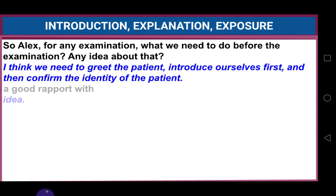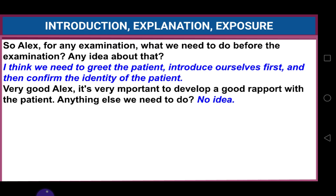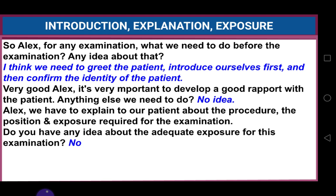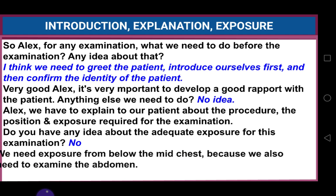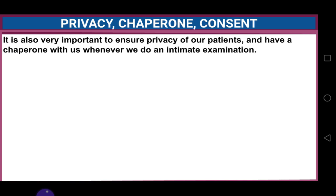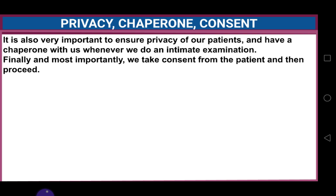Ask the student what we need to do before the examination. They might say: greet the patient, introduce ourselves, and confirm the patient's identity — praise them for that. Then explain: we also need to tell the patient about the procedure, the position and exposure required. For per speculum examination, we need exposure from below the mid-chest because we also examine the abdomen. It is important to ensure privacy and dignity and to have a chaperone for any intimate examination. Finally and most importantly, we take consent from the patient.